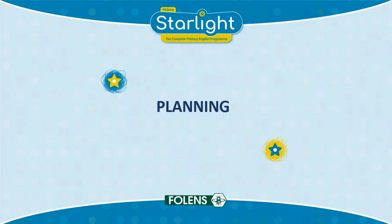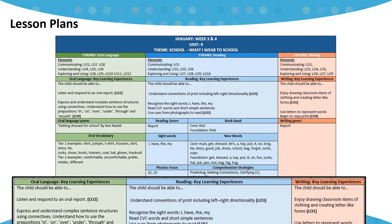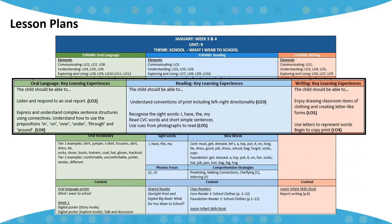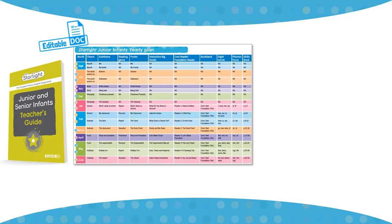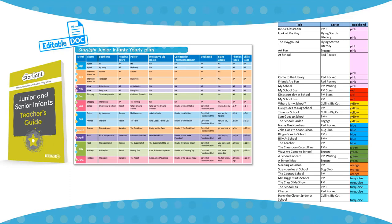With Starlight, all your planning needs are covered. The programme has integrated fortnightly plans for oral language, reading and writing, all mapped to the primary language curriculum. Two focus learning outcomes, or specific learning experiences, have also been identified across each strand for each fortnightly unit of work. Editable yearly plans are also available, along with lists of levelled readers based on the same theme or genre as the text in the class readers.